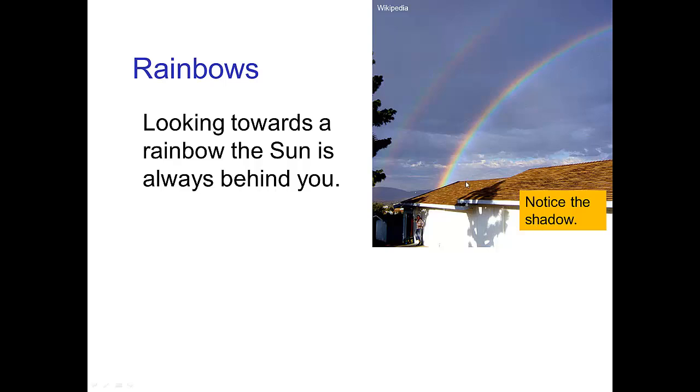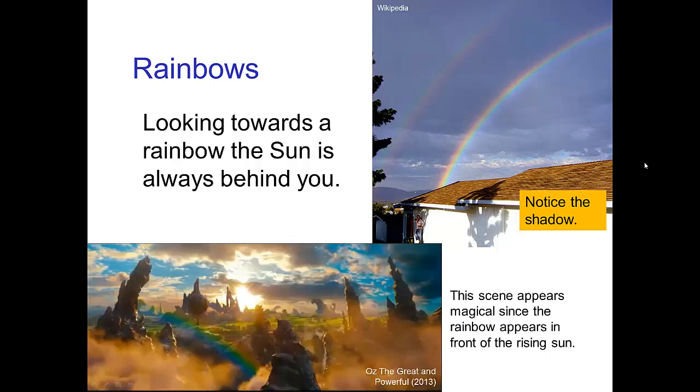When a rainbow is formed and you're looking at it, the sun is always behind you. The sunlight has to enter the raindrops, reflect off the back, and come back to you. The rainbow is always seen as a reflection of the sun, so the sun has to be behind you. This scene from Oz the Great and Powerful is particularly magical because we can't have this in nature—a rainbow appearing in front of the sun.